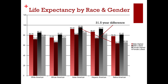The results of some of these differences in care play out in a 31.5-year difference between the highest and lowest rates of life expectancy — Asian American females having the highest life expectancy, and the lowest life expectancy being among Native American males in this country.